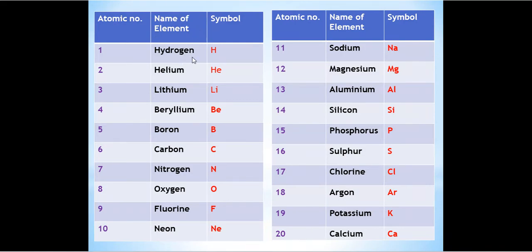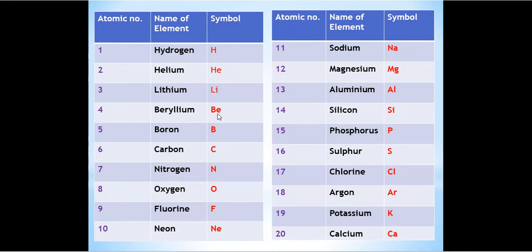Now let's look at their symbols. Hydrogen has the symbol H. Helium has the symbol He — H is capital and e is small. Whenever a symbol uses two letters, the first letter is always written in capital and the second in small. For example, lithium is Li — L is capital and i is small. Beryllium is Be, boron is B, carbon is C, nitrogen is N, oxygen is O, and fluorine is F.